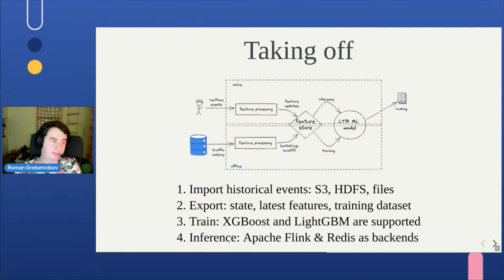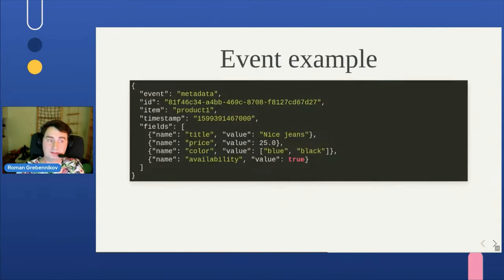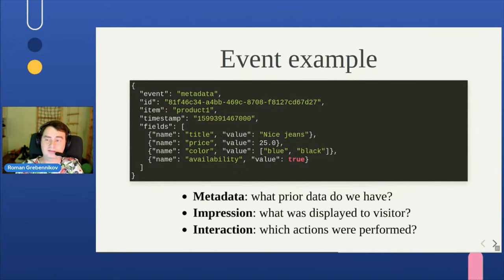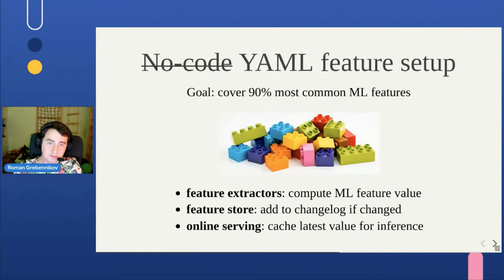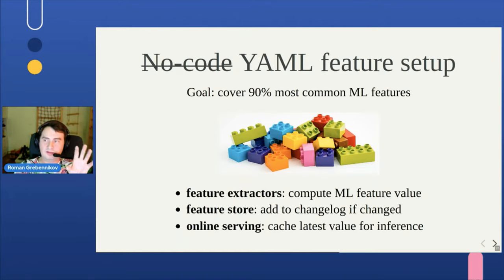The example events that Metarank consumes have multiple types but are structurally similar: a fixed set of fields plus flexible metadata fields describing items exposed to customers and how customers interacted with those items. The core of Metarank is the feature extractor, which implements the most common ways to transform e-commerce or other event types into machine learning features usable for personalization.